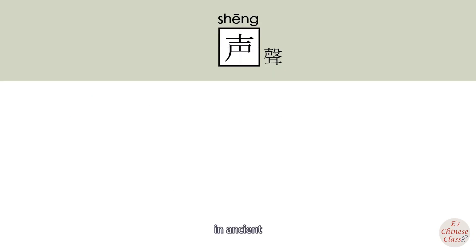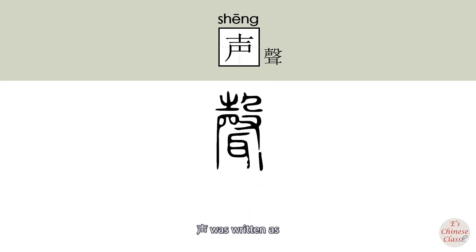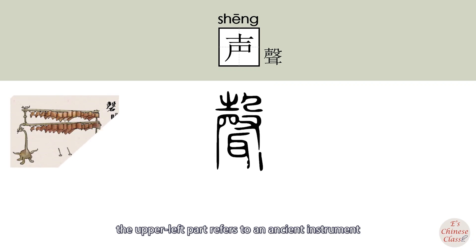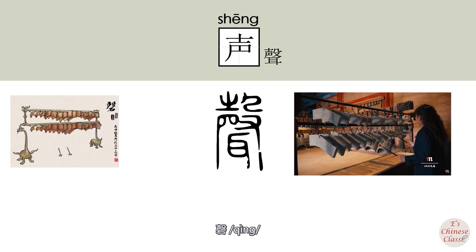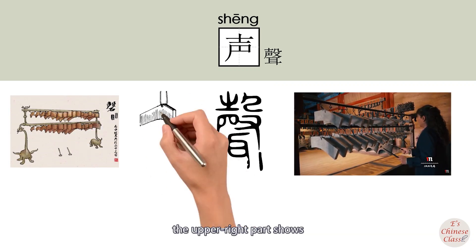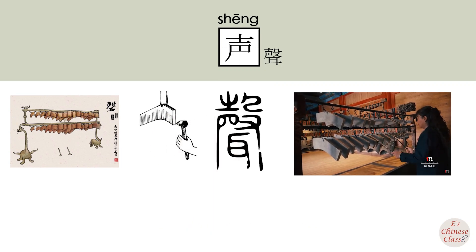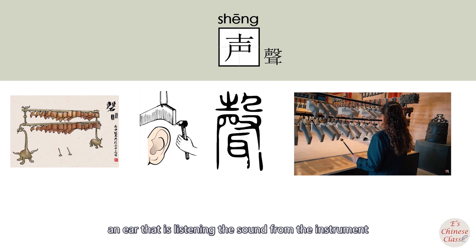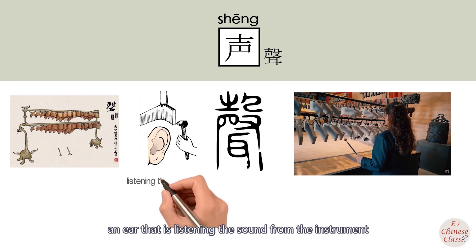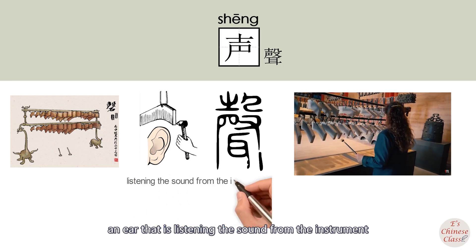In Asian, SHEN was written as follows: the upper left part refers to an Asian instrument, the upper right part shows the hand holding the drumstick, and the lower part refers to an ear that is listening to sound from the instrument.